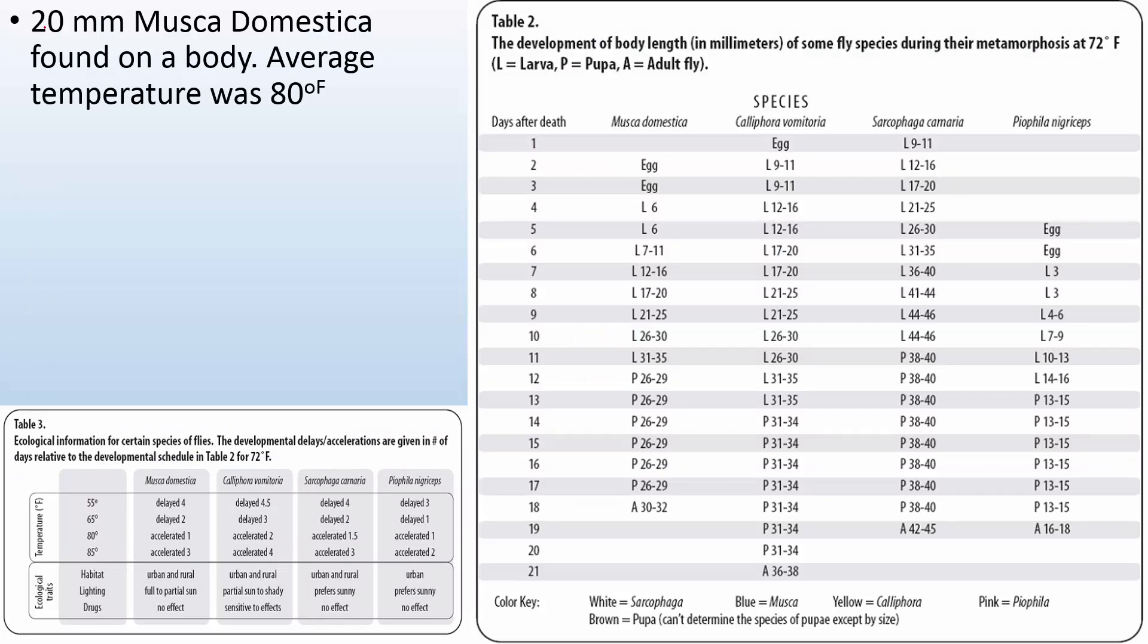So let's take a look. Here's an example. We got 20 millimeter Musca Domestica found on a body. The average temperature was 80 degrees Fahrenheit. So I find Musca Domestica, I look for 20 millimeters which is like right about here. So that's about eight days, but it says the average temperature was 80 degrees Fahrenheit. So I look down, 80 degrees Fahrenheit, how does that affect Musca Domestica? Accelerated by one. So normally it would take eight days, but it was accelerated. So I got there sooner. So I minus one day. So my estimation would be about seven days.